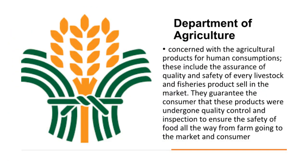The Department of Agriculture is concerned with agricultural products for human consumption, including the assurance of quality and safety of every livestock and fisheries product sold in the market. They guarantee that products have undergone quality control and inspection to ensure food safety from farm to market to consumer. It also aims to protect consumer health and facilitate market access of local foods. Through the Food Safety Act of 2013, in coordination with the Department of Health, they ensure that farm products are free from foodborne and waterborne illness and unsanitary, unwholesome, misbranded or adulterated foods.